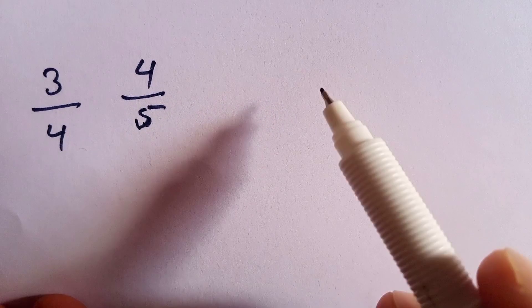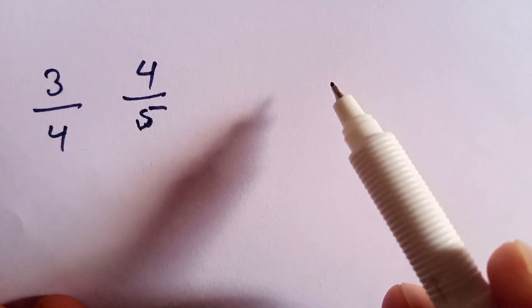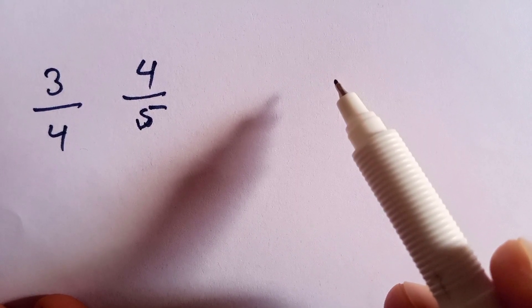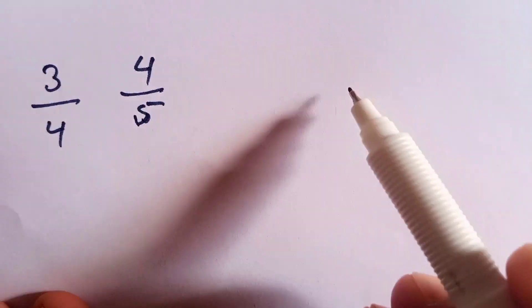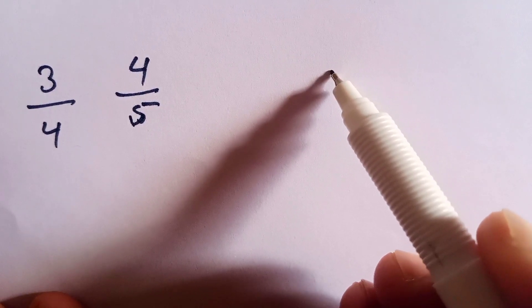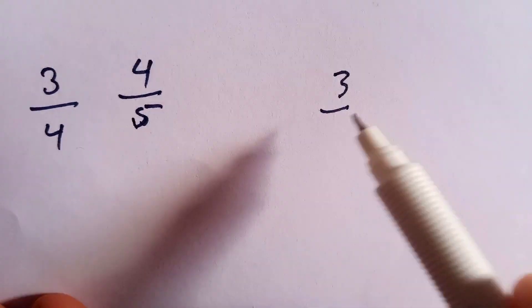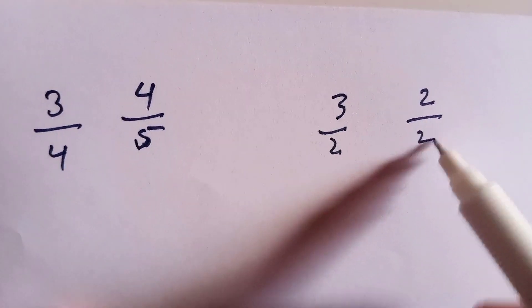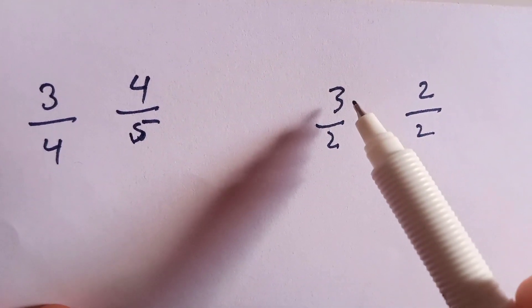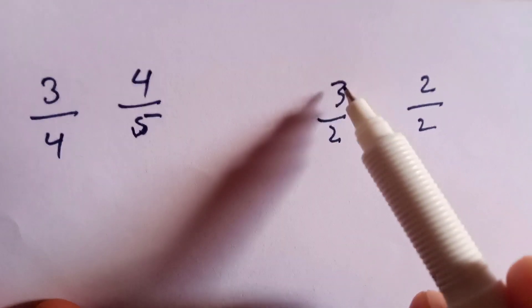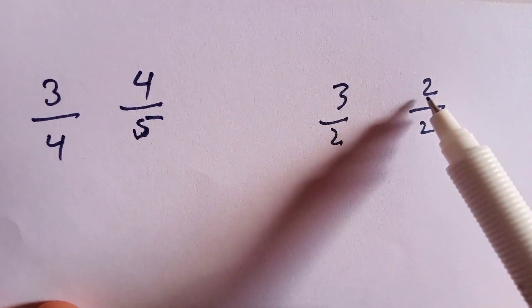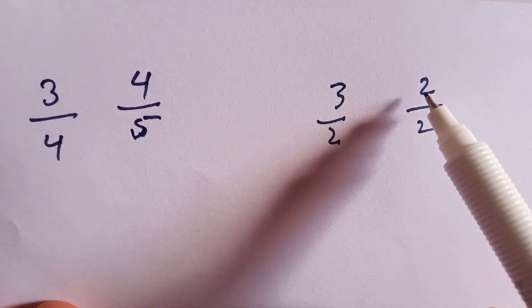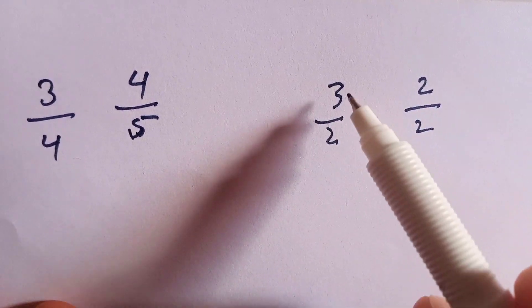First of all we need to know how the size of a fraction depends on the numerator and the denominator. We will write 3 over 2 and 2 over 2. Here we see that the numerator is 3 and the numerator is 2, so 3 is greater than 2.